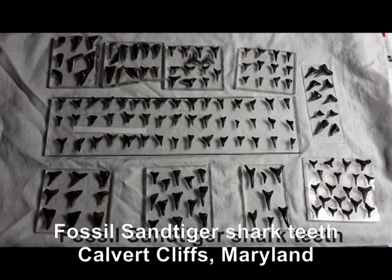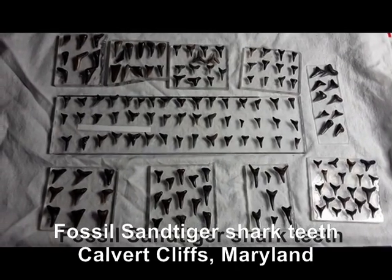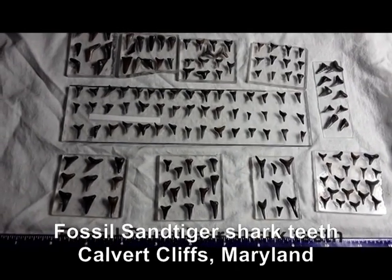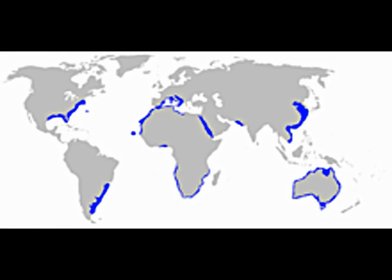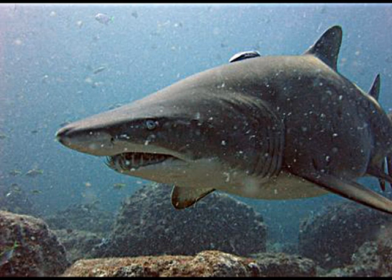The Sand Tiger Shark. Besides being found as fossils ranging from the late Cretaceous to the present, today's Sand Tiger Shark, Carcharias taurus, is a species of shark that inhabits subtropical and temperate waters worldwide — from sandy shorelines, hence the name Sand Tiger Shark, and submerged reefs to a depth of 627 feet.